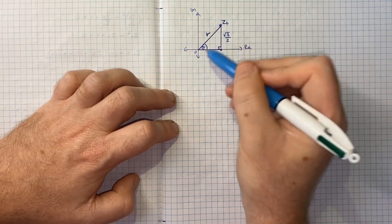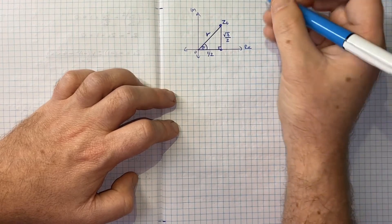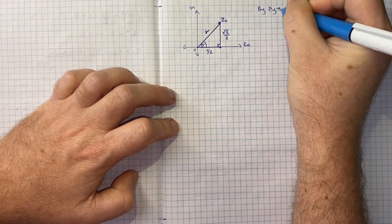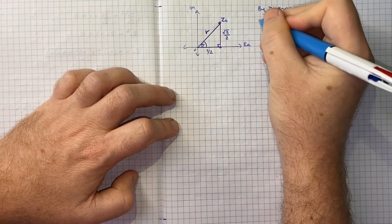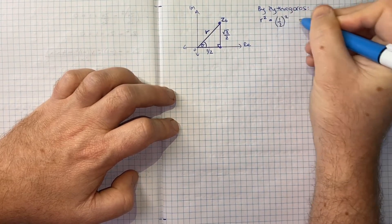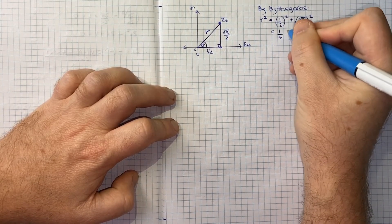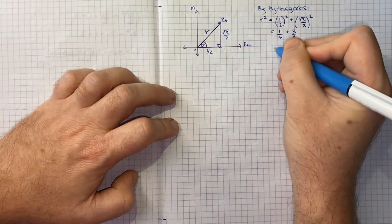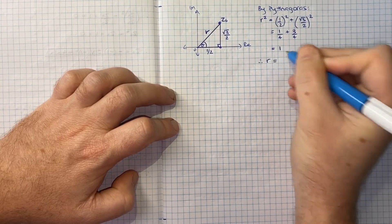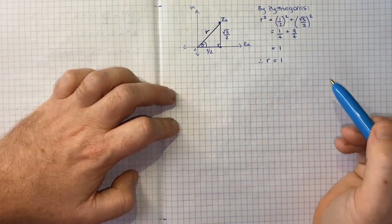Now we just need to find r and theta using what we know about right-angled triangles. Maybe we'll start with r, because we can say for r by Pythagoras, r squared, the hypotenuse, would be the sum of the squares of the other two sides. So it'll be a half squared plus root 3 over 2 squared. A half squared would be a quarter, and root 3 over 2 squared would become 3 over 4. That's going to be a quarter plus 3 quarters is 1. Therefore r is the square root of 1, which is 1, and we want the positive square root only because we're getting this positive distance.